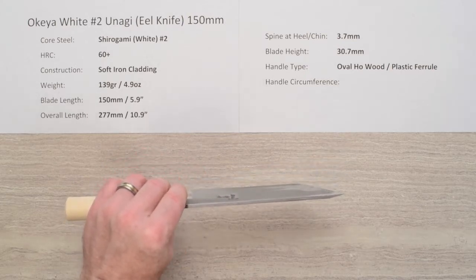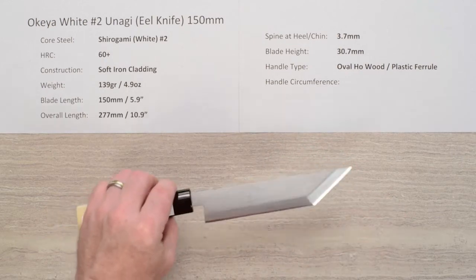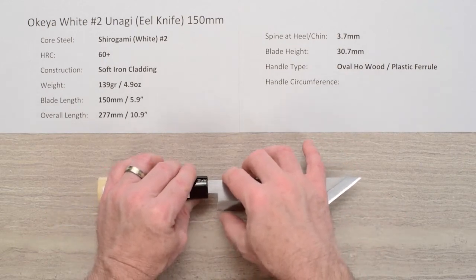This knife is fairly thick, as is the style, so it's about 3.7mm thick. The blade height back here is about 30.7mm.